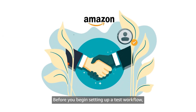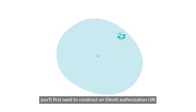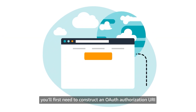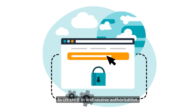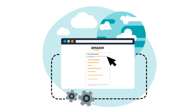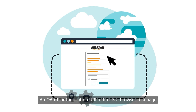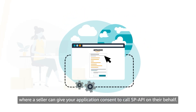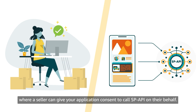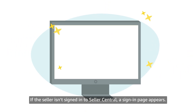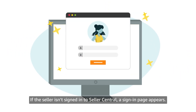Before you begin setting up a test workflow, you'll first need to construct an OAuth Authorization URI to create it and receive authorization. An OAuth Authorization URI redirects a browser to a page where a seller can give your application consent to call SP API on their behalf. If the seller isn't signed in to Seller Central, a sign-in page appears.